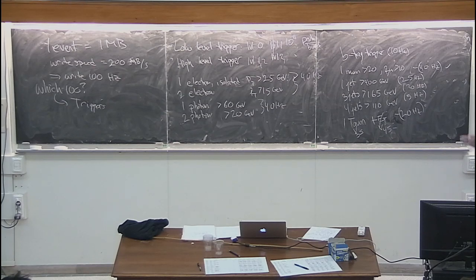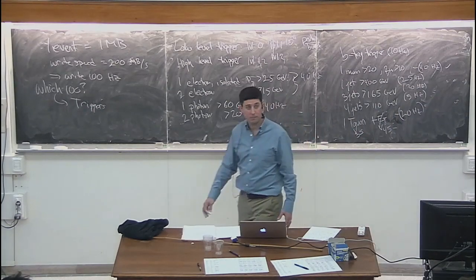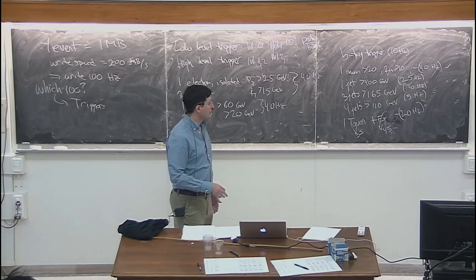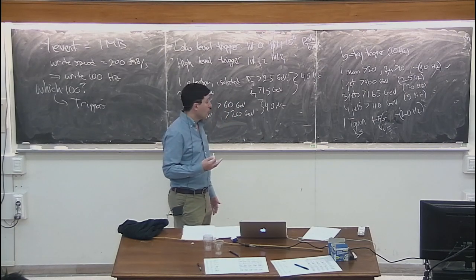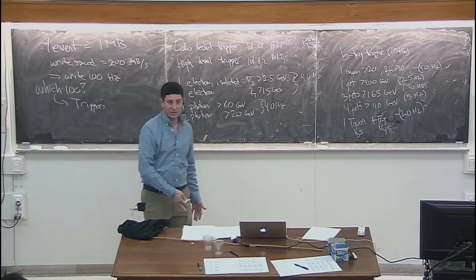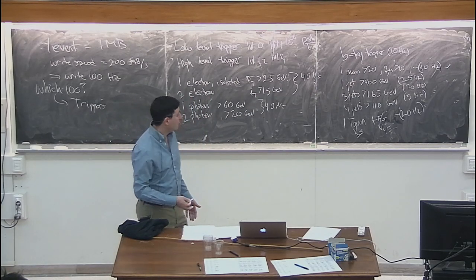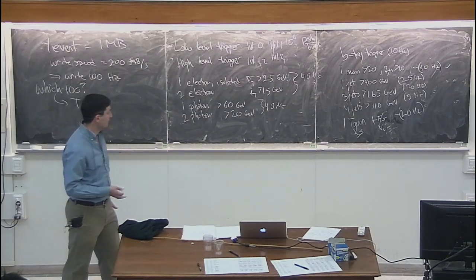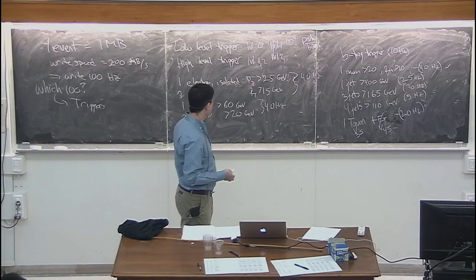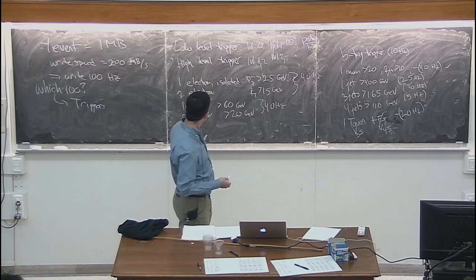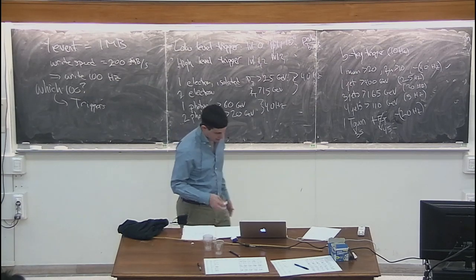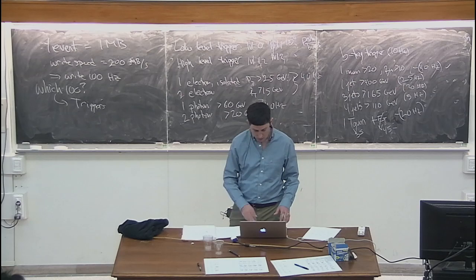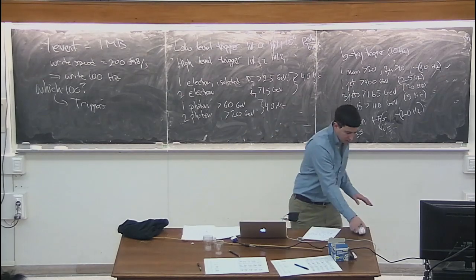As the LHC increases luminosity, trigger thresholds will have to increase — you can't have a 400 GeV jet trigger become a 300 GeV trigger at higher luminosity. For a mono-jet plus missing energy search, you'd use a global missing ET trigger. Now let me switch to showing some slides — pictures of the LHC and detectors.